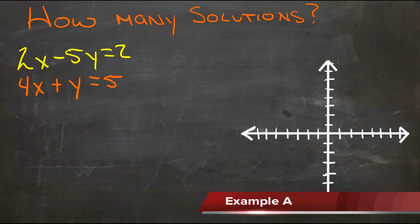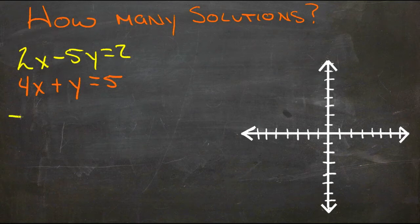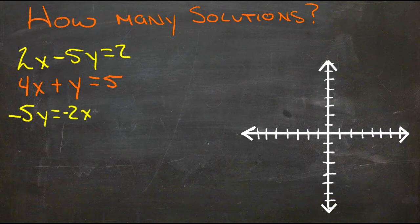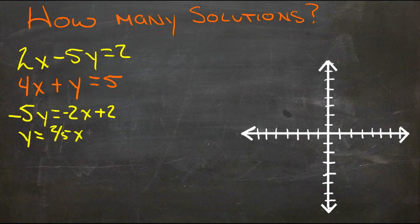Let's take our first equation, 2x minus 5y equals 2, and write it in y equals mx plus b form. First we'll subtract 2x from both sides, that gives us negative 5y equals negative 2x plus 2. Then we'll divide both sides by negative 5 and we'll get y equals 2 fifths x minus 2 fifths.